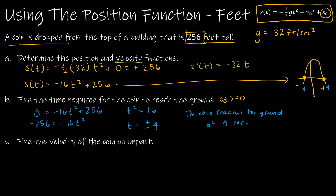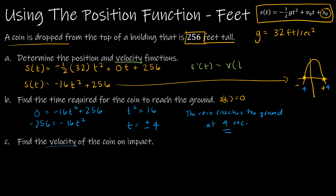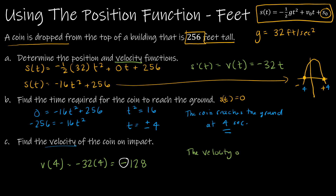The last question asks for the velocity of the coin on impact. Now that we know it reaches the ground at four seconds, we use the velocity function v of t equals negative 32t. Evaluating v of 4 gives negative 32 times 4, which is negative 128. The negative tells us the direction — the coin is moving downward. So the velocity of the coin is 128 feet per second moving toward the ground.